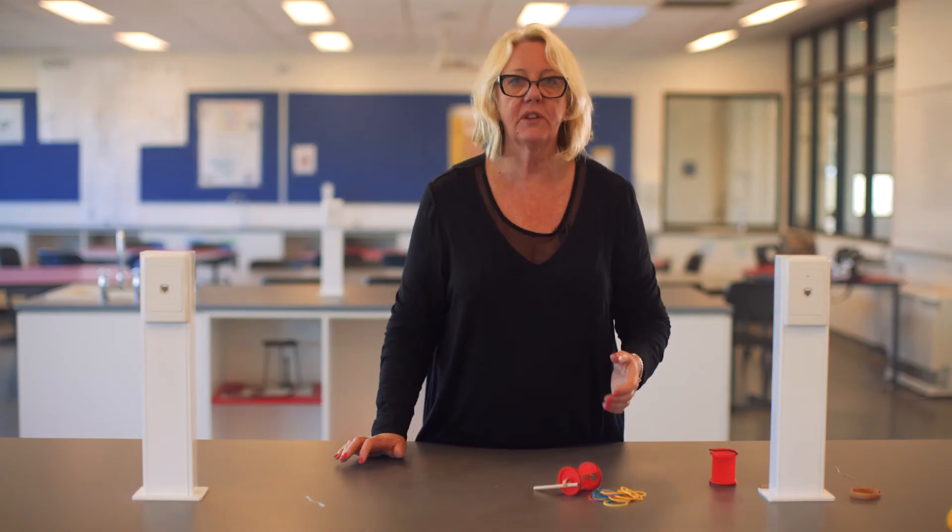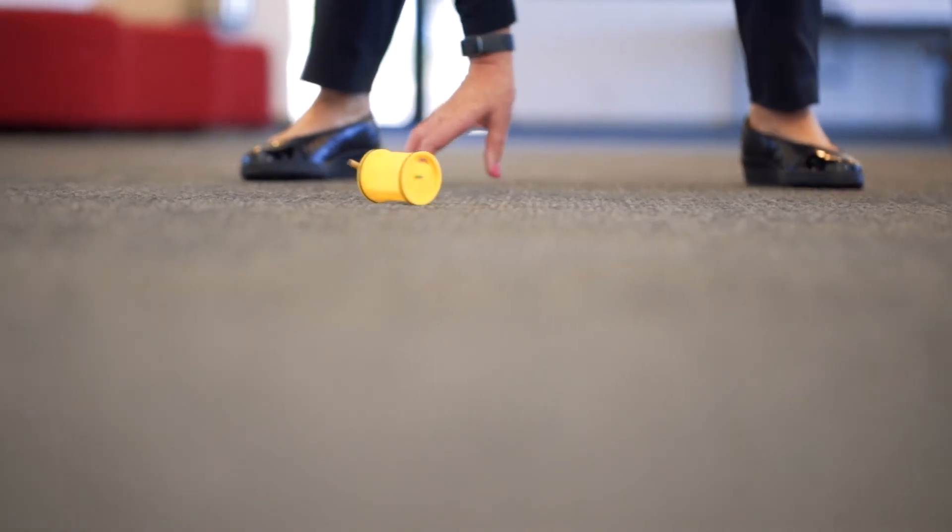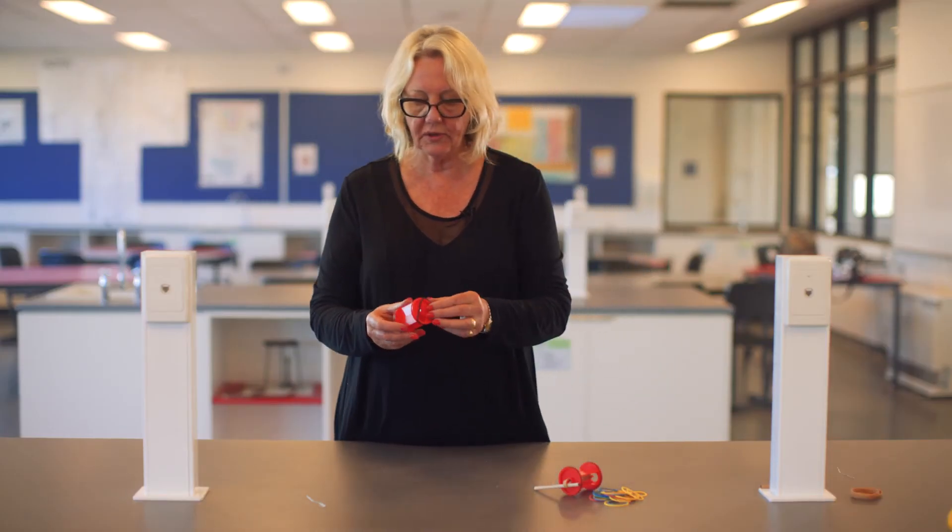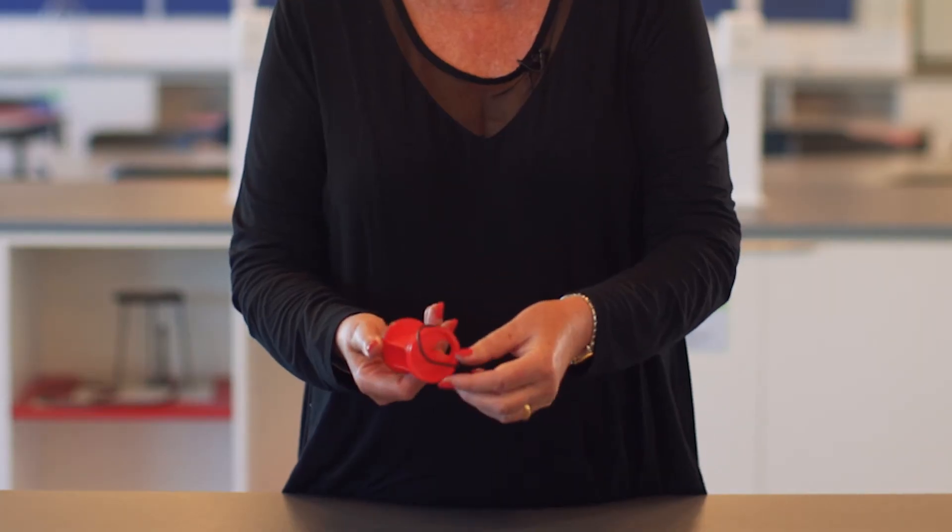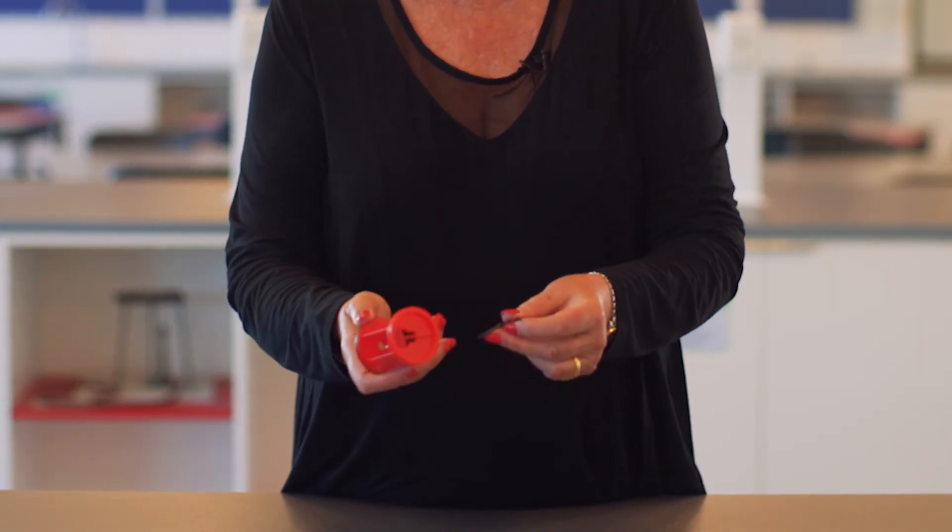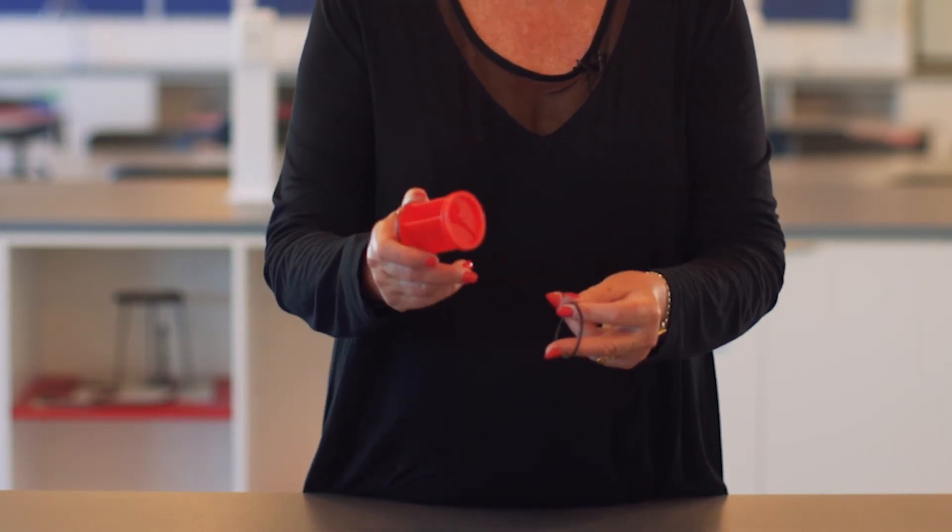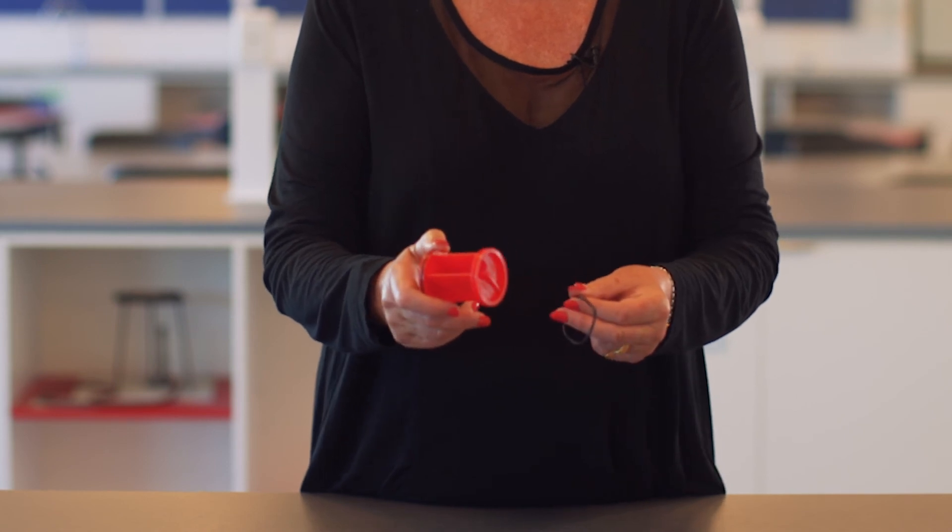We can try them on different surfaces such as lino or carpet or the desktop that we're using. And you can also try removing the o-ring which is around the edge here which is like removing the tyres from a car and trying it without its tyres.